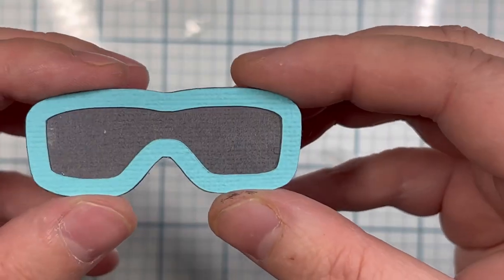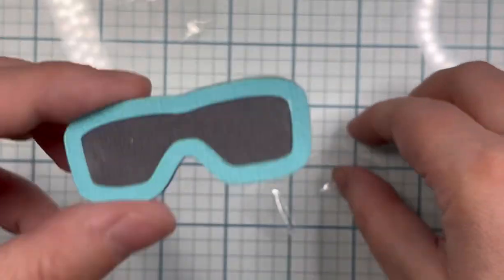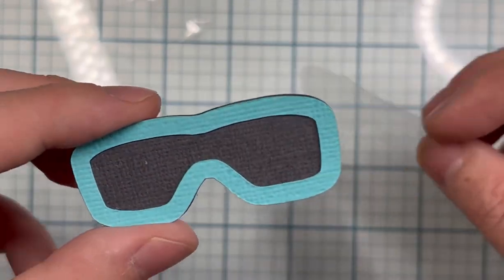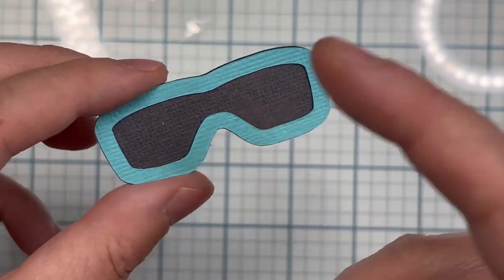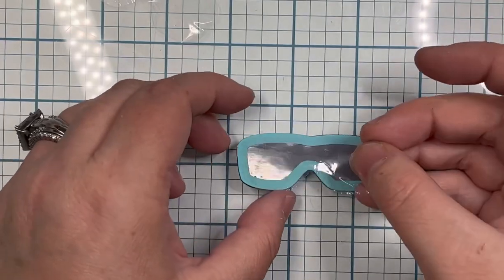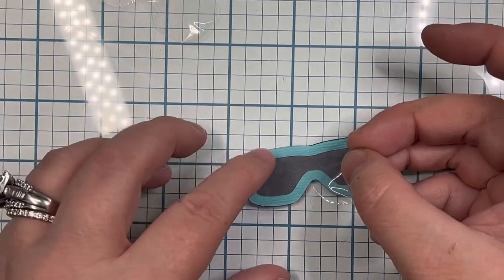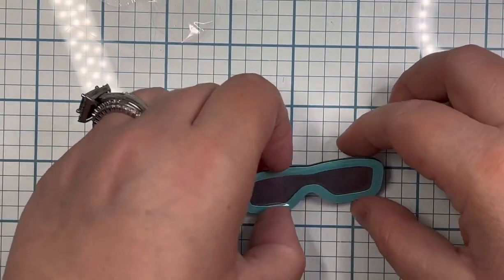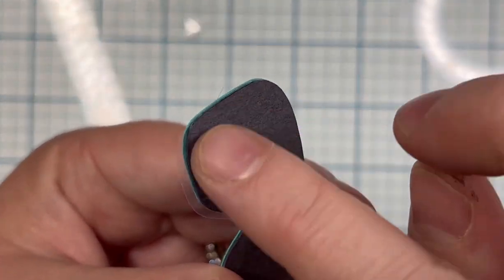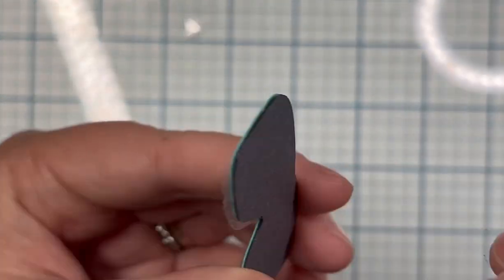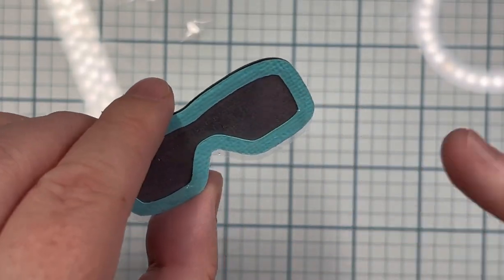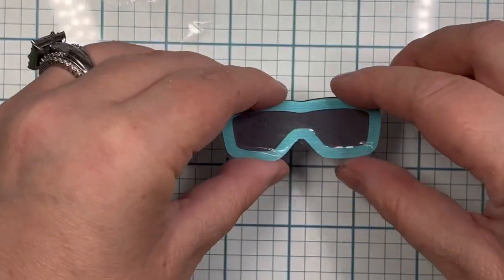These are really simple to make. For the goggles, I wouldn't have put the gray backing on. I would have just left it with the acetate and the goggle front because these actually go to a goggle set. Instead of gluing on the gray piece, I would have glued along the outer edge of the back of the acetate and stuck it right to his head.